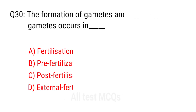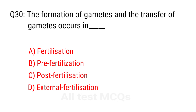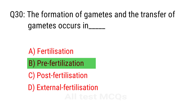Q30. The formation of gametes and the transfer of gametes occurs in? The right answer is option B: Pre-fertilization.